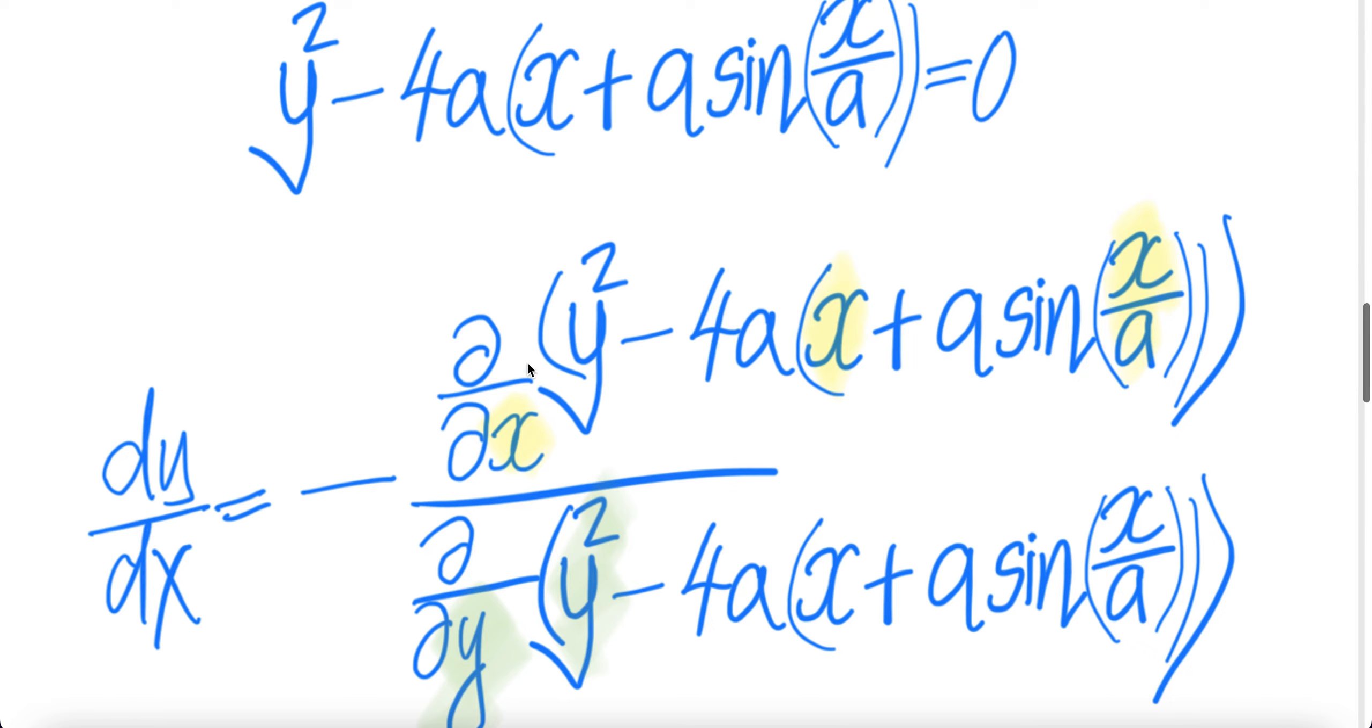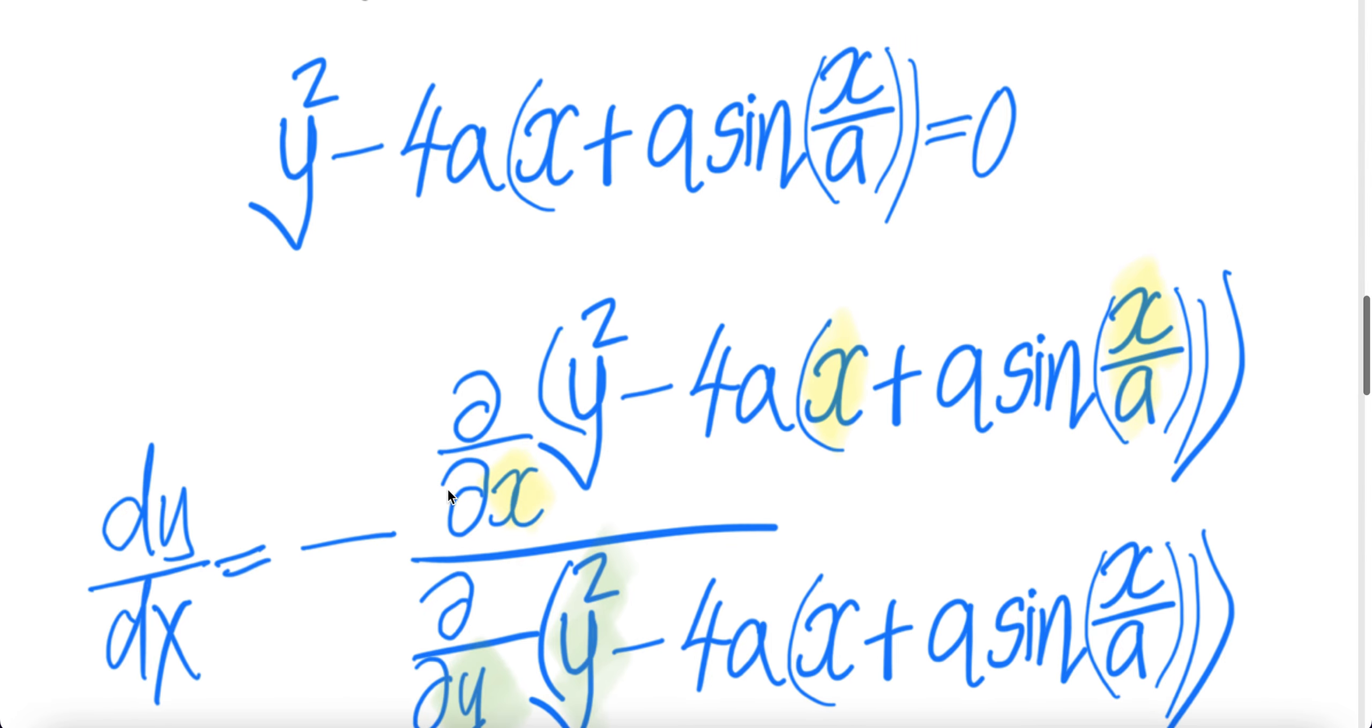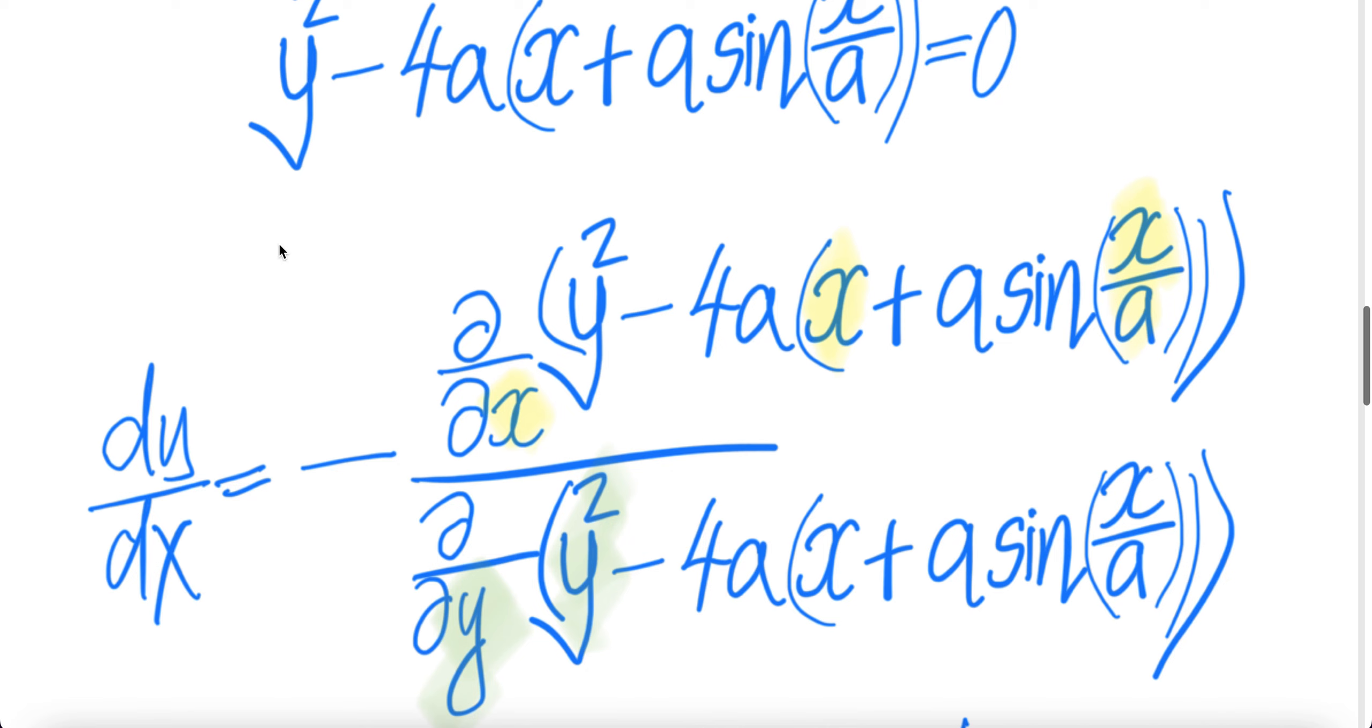dy/dx is given by the partial of this with respect to x divided by the partial of the same thing with respect to y.